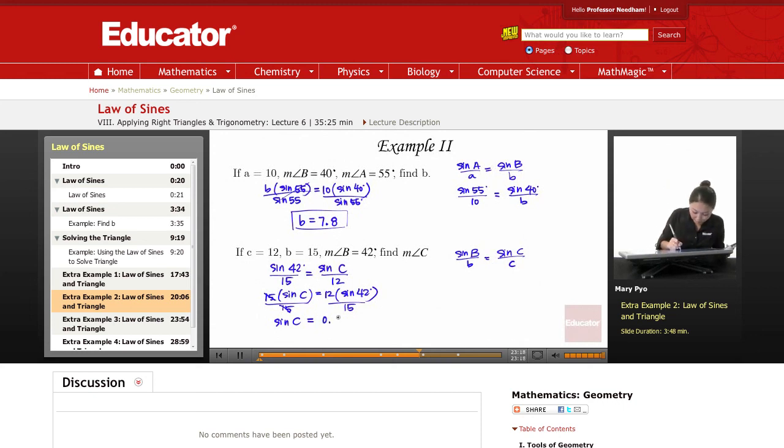So it's 0.5353. I need to find my angle measure. Okay, so I'm going to second and sine, inverse sine of 0.5353. So measure of angle C is 32.36 degrees.